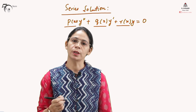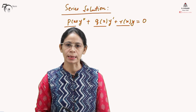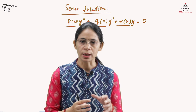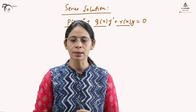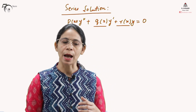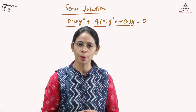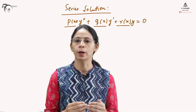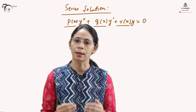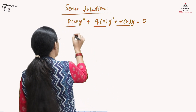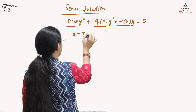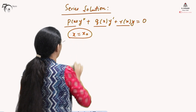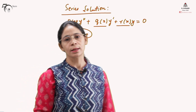There are a few conditions which we need to satisfy to apply the series solution. We need to understand that the series solution is an approximation technique. Therefore, we need to decide a point about which we would like to find the solution. Let us say that we need to find the solution about x equals to x-naught, where x-naught is lying in the interval for which x is defined.